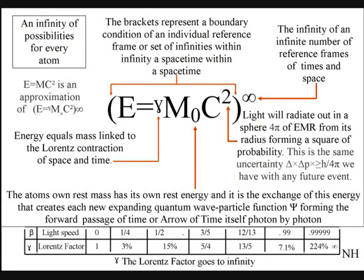Energy equals mass, linked to the Lorentz contraction of space and time. Therefore, the greater the energy, the greater the contraction of space, and the slower time will run. Mass will increase relative to this, and each reference frame can be seen as a vortex in space and time.